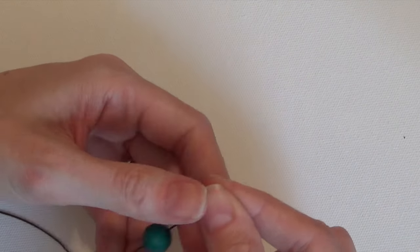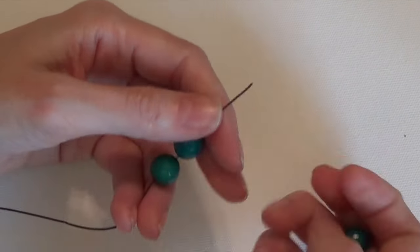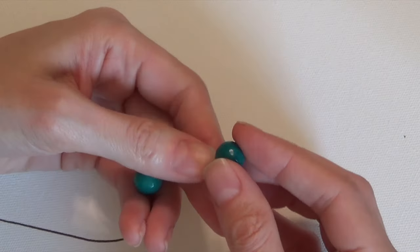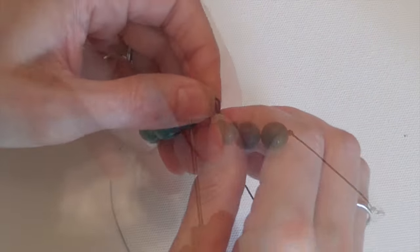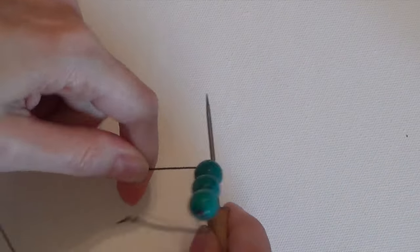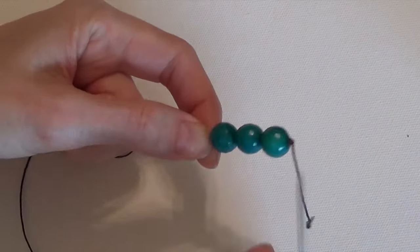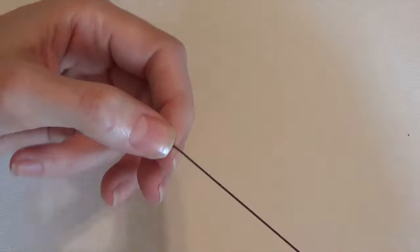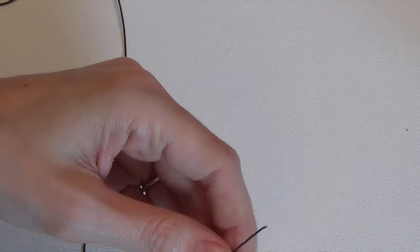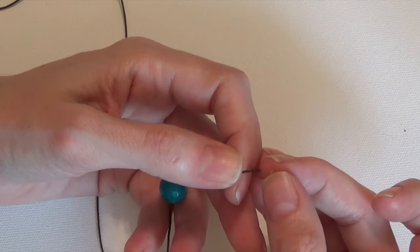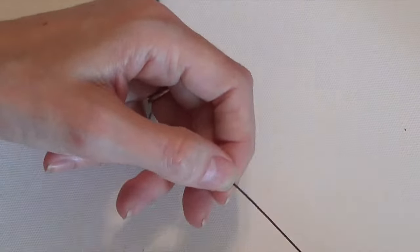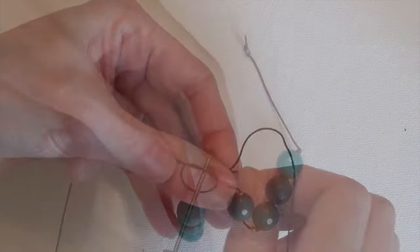Now I'm going to string on three 12 millimeter beads and then make a knot. I'm making all of the knots on the inside of the beading as single knots. Next is going to be one spacer bead, one 12 millimeter bead, and then one more spacer bead, and another knot.